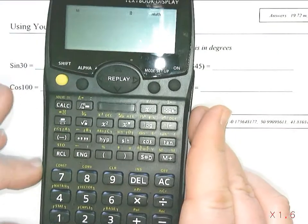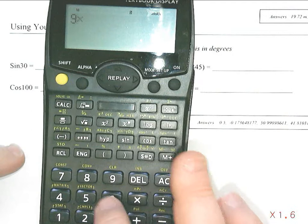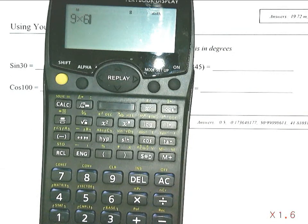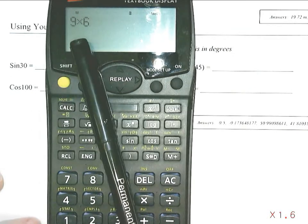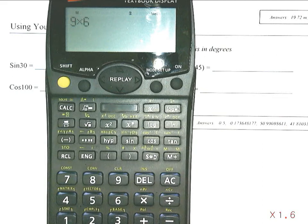On this calculator, if I type in 9 times 6, you'll notice that 9 times 6 actually appears on the screen. When I'm talking about calculators, I will talk about what to do on a calculator where you do not see things appear on the screen versus a calculator where you do see what you type in appear on the screen.